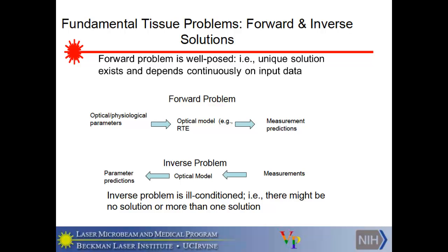The forward problem takes you from the input parameters, optical parameters, physiological parameters, to a model, like the radiative transport equation, and then, finally, to the prediction. The problem is what's called well-posed. That means that it has a unique solution and the solution depends continuously on the input data. In other words, if you change mu A or mu S a little bit, the solution doesn't change very much either. So there's a continuous dependence.